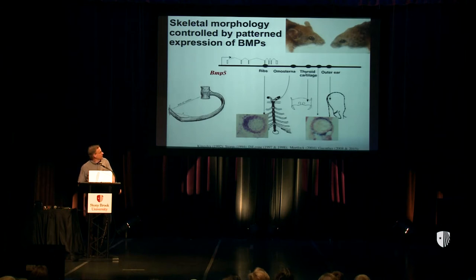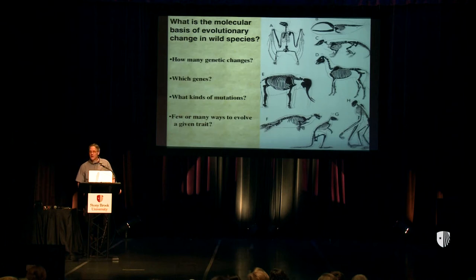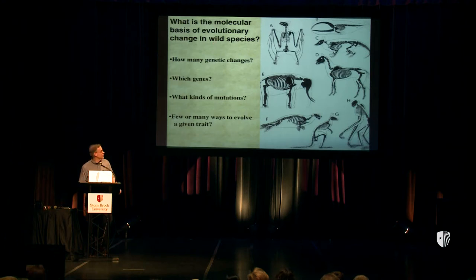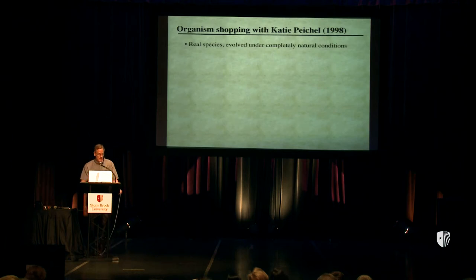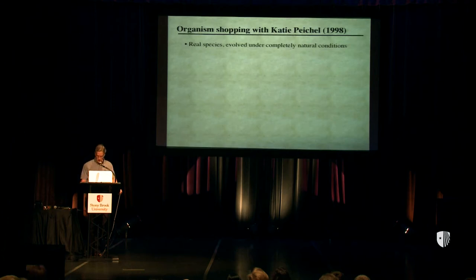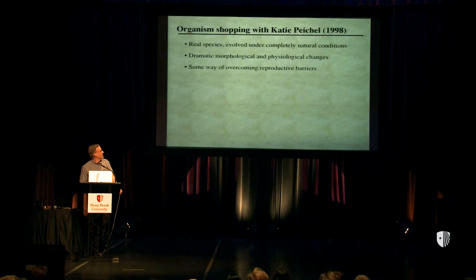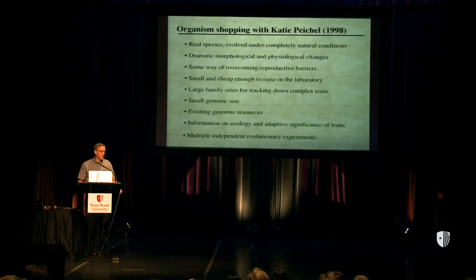That work convinced us that genetics of morphology could work and take you to the heart of developmental pathways controlling formation of particular structures. That was all done in laboratory mice, and in the 1990s, Katie Peichel and I got interested in whether we could use a very similar genetic approach — not in lab mice but in wild species — to tackle the kinds of evolutionary problems I mentioned. So in 1998, we had a very fun summer looking for organisms that would make it possible to take a genetic approach to studying vertebrate evolution. We wanted real species that had evolved under natural conditions, with dramatic morphological and physiological changes, and some way of overcoming reproductive barriers between forms.